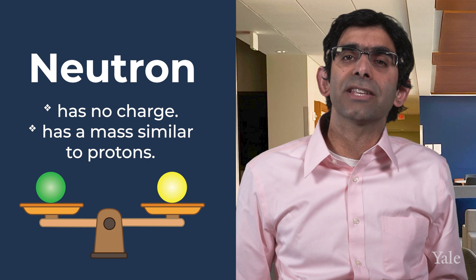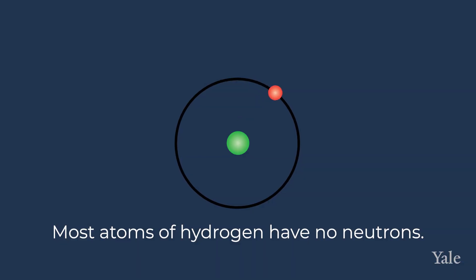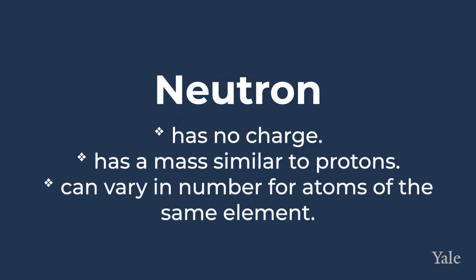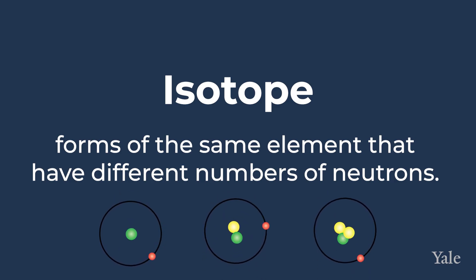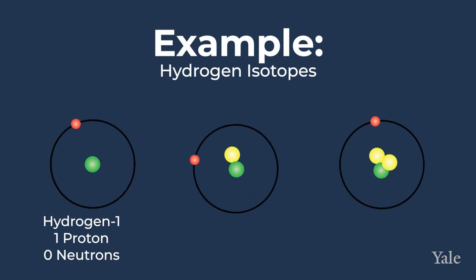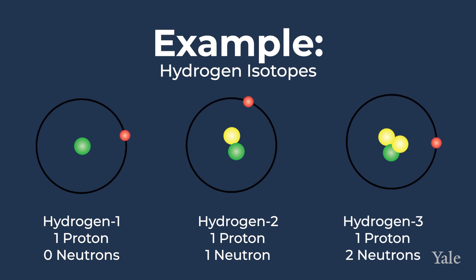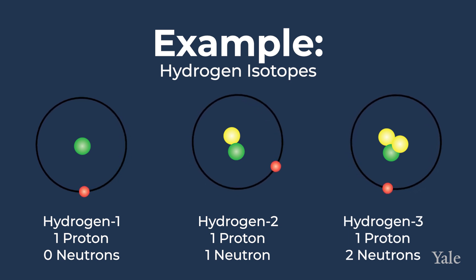What about neutrons? What are they and how many neutrons does each element have? Neutrons have no charge and have a similar mass to protons. Most atoms of hydrogen have no neutrons. However, different atoms can have different numbers of neutrons without changing the identity of the element, because only the number of protons defines an element. Isotopes are forms of the same element that have different numbers of neutrons. For hydrogen, apart from the isotope with no neutrons, two other isotopes exist: one with one neutron and one with two neutrons.